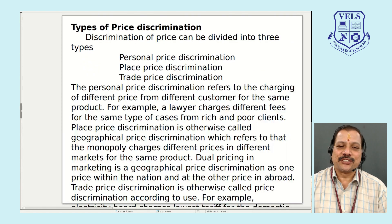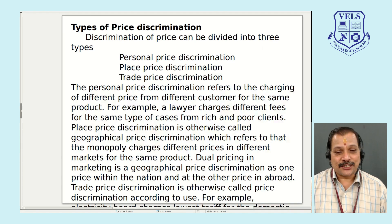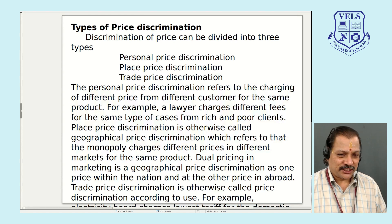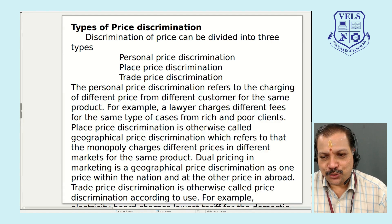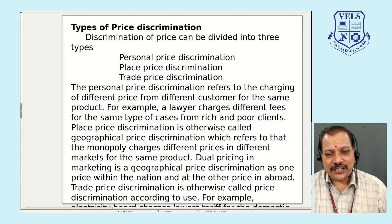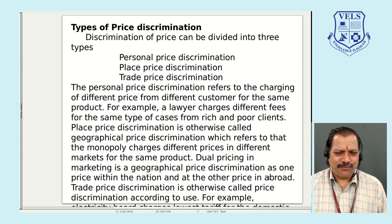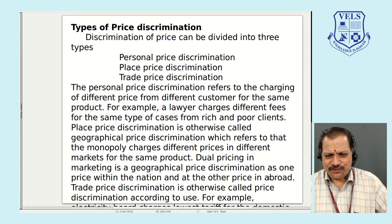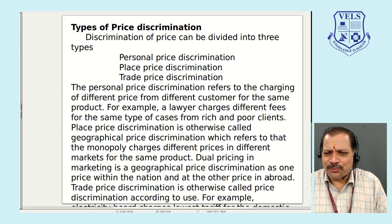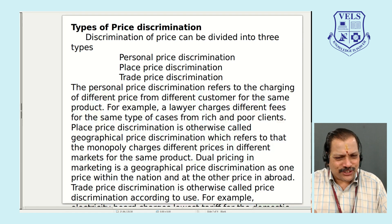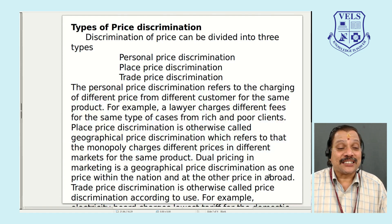Now we look at the types of price discrimination. Normally, price discrimination is divided into three categories. The first is personal price discrimination — charging different prices from different customers for the same product. For example, a lawyer charges different fees for the same type of case: if the customer is rich he will charge more, and if the customer cannot pay, he will charge less, based on the economic status of the client.